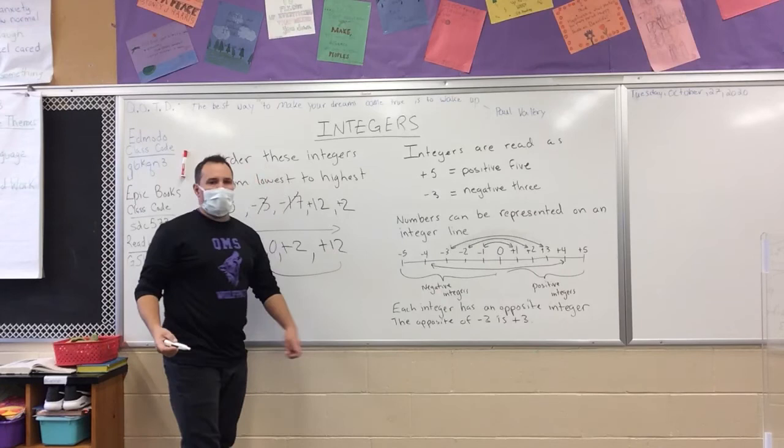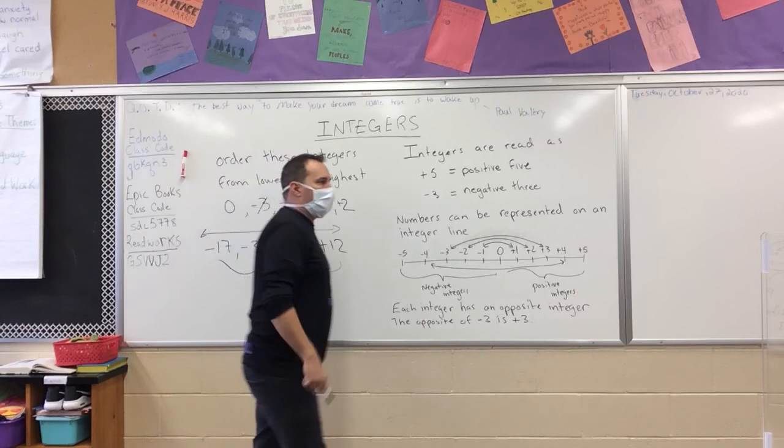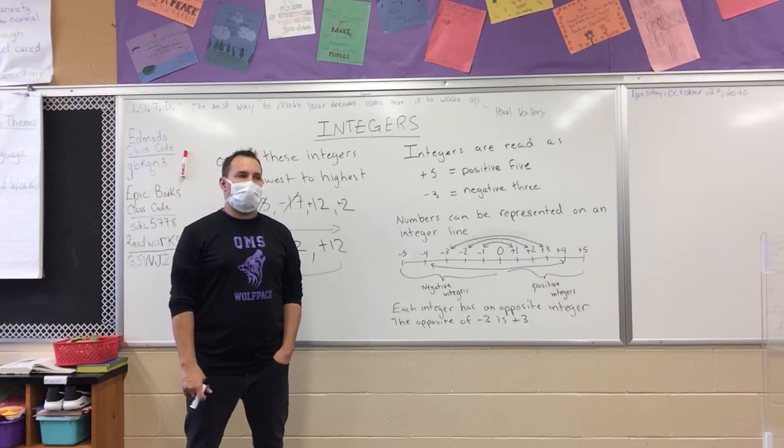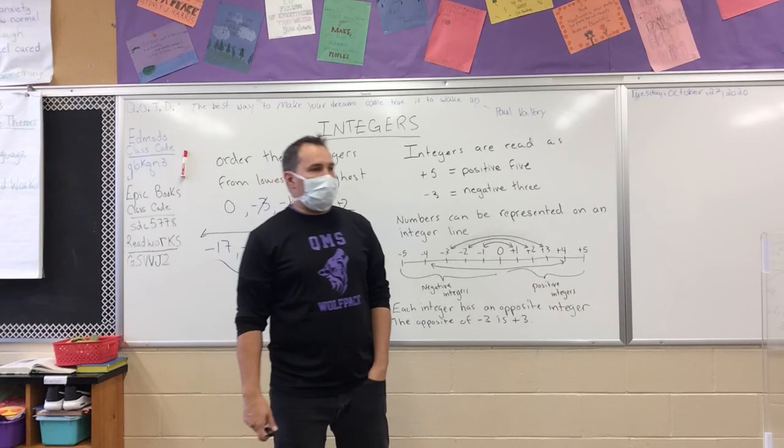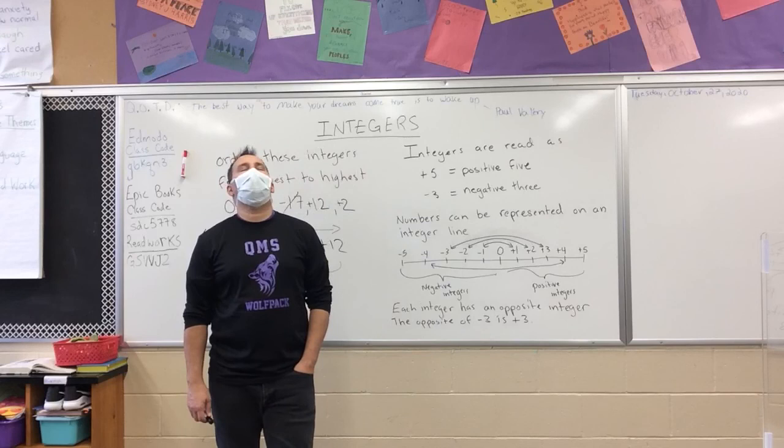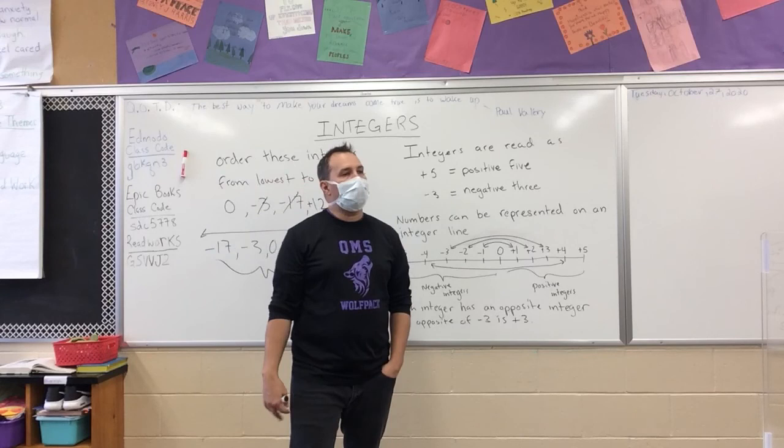You'll have some questions that are sentences asking you to write integers. For example: a plane flies at 14,000 feet above sea level — how do you write that as an integer? We know it would be positive 14,000. Or: Joey dug a hole six feet deep — how do we write it as an integer? Negative six, because it's dug down. Today we're working on practice through IXL — have fun!